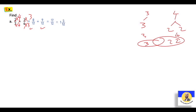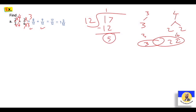الـ answer ممكن أغليها mixed number. إزاي نخليها mixed number؟ نقول seventeen ÷ 12. يطلع معنا 1، لأن 1 × 12 = 12، والـ remainder هي 5. فالـ answer هيكون one and five over twelve. ممكن الـ answer يفضل fraction، أو ممكن يحتاج نعمله change into mixed number.